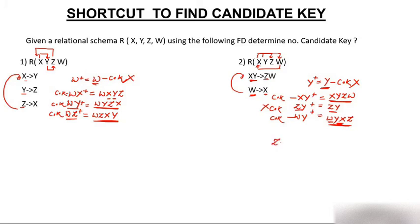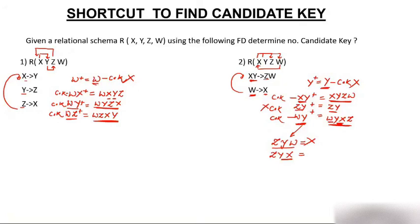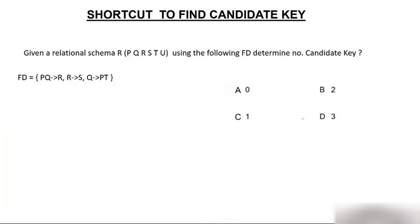Now closure of WY: starting with WY, using W→X we get X, now we have XY, so using XY→ZW we get Z and W (W already there), so we write Z. WY determines all attributes — WY is also a candidate key. Since ZY is not a candidate key, try extending it: ZYW — but WY is already a candidate key (proper subset), so ZYW cannot be a candidate key. ZYX — but XY is already a candidate key (proper subset), so ZYX cannot be a candidate key. Therefore we have exactly two candidate keys: XY and WY.